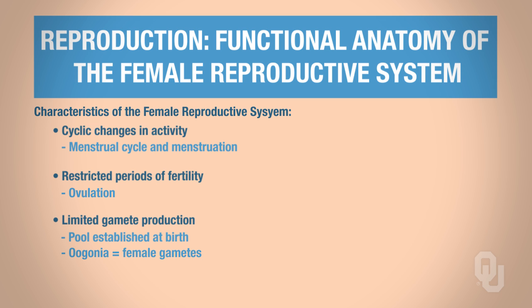Oogonia are the female gametes. Females are born with a set number — we don't make more oogonia throughout life. This is a pool that's established at birth, and that's all the oogonia females will ever have.